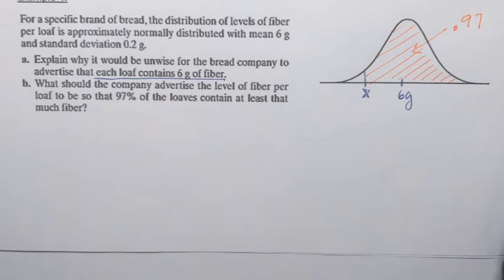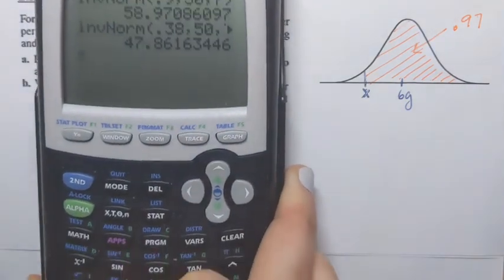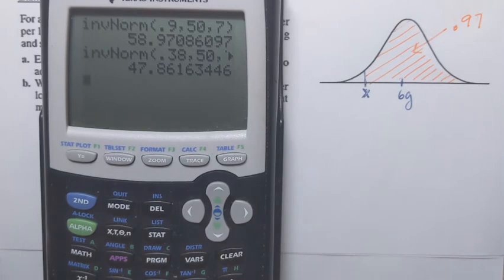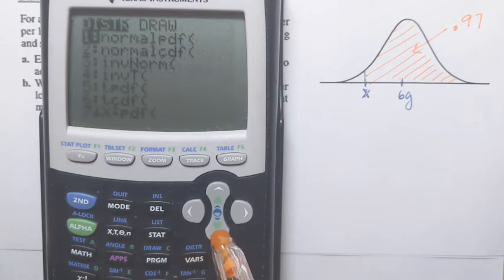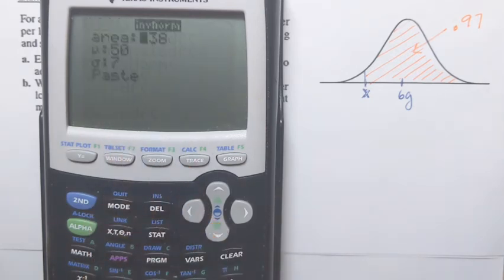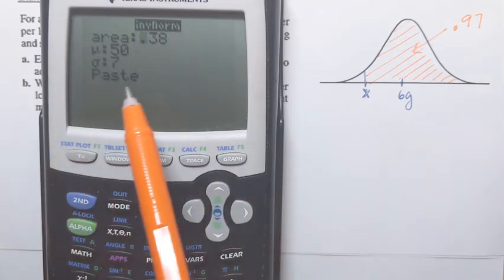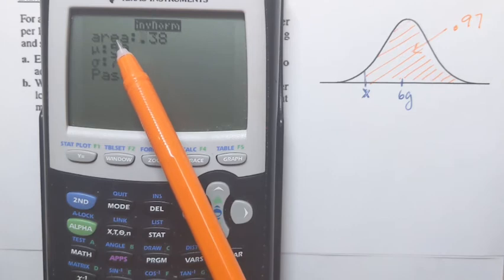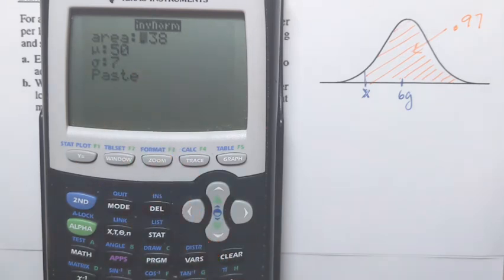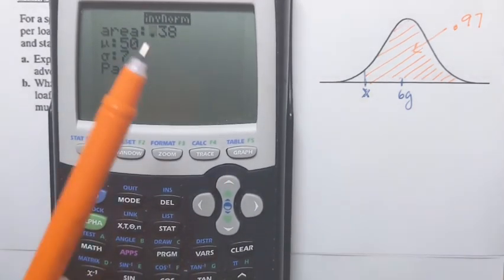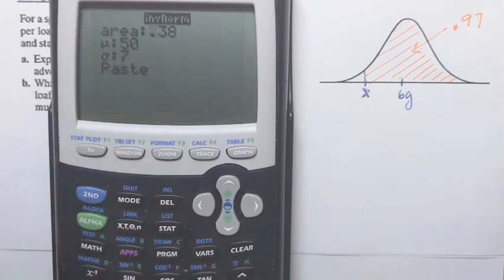To find the value of a normal random variable when we know area, we have to use calculator function invnorm. And it can be found by pressing 2nd vars over here and going down to line number 3 invnorm. That's where you need to enter area, mean, and standard deviation for that distribution. But we have to be careful and remember that with this calculator, this area represents area to the left of the unknown value of the normal random variable. It's always area to the left.